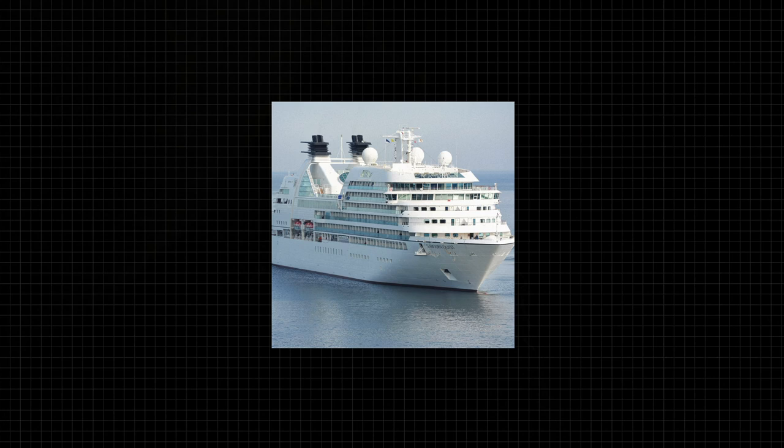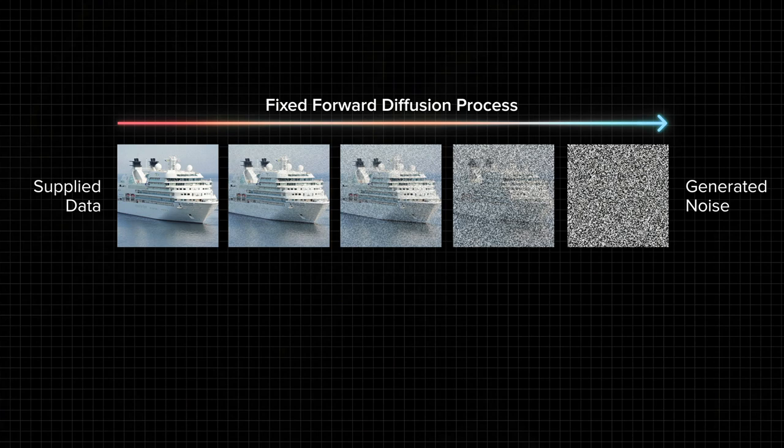Here's how it works. First, a diffusion model takes a training image and starts adding noise to it. With each step, the image loses its details until it becomes only noise. The idea is that the model learns what the image looks like at each stage, so it can then reconstruct it. During the reversal process, the model tries to predict what the next, less noisy image will look like.